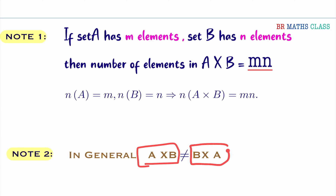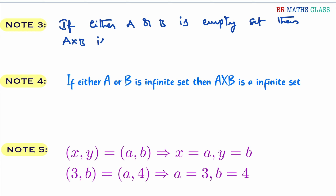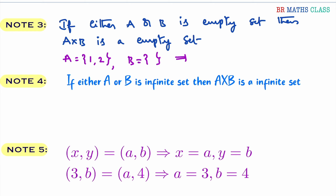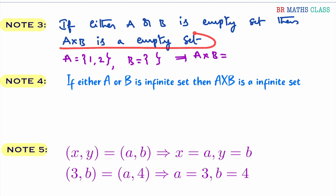In general, A cross B is not equal to B cross A. Note 3: if either A or B is an empty set, then A cross B is an empty set. For example, suppose set A is {1, 2} and set B is the empty set. If you try to calculate A cross B, you take one element from A and pair with elements of B, but there is no element in B to pair with. So if either A or B is an empty set, then A cross B is an empty set.